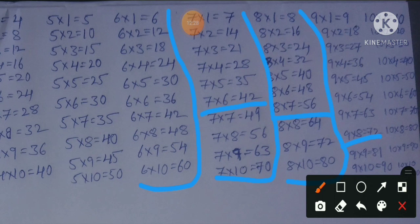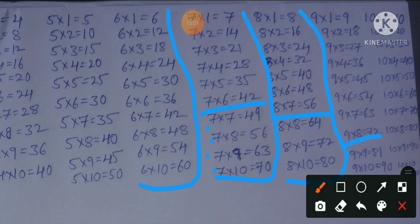To simplify: if you know the 6 times table perfectly and want to learn the 7th table, you only need to learn four lines. Most students get stuck at the 7, 8, and 9 tables. Remember — in the 7 times table you need only four lines, in the 8 table only three lines, in the 9 table only two lines, and in the 10 table only one line. Apply this technique and you will learn and remember the tables very quickly.